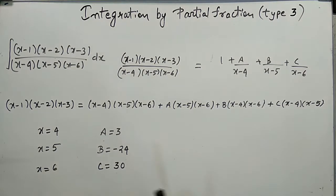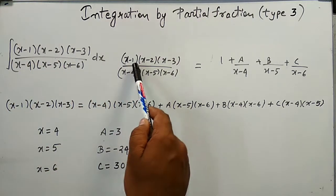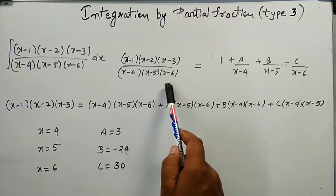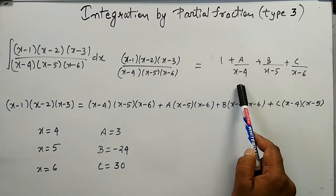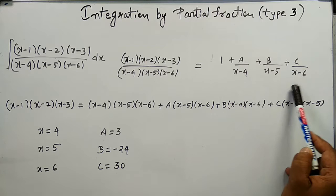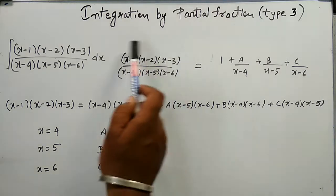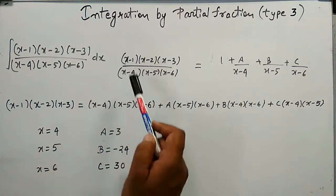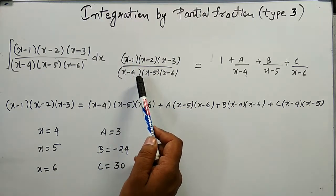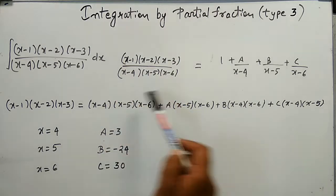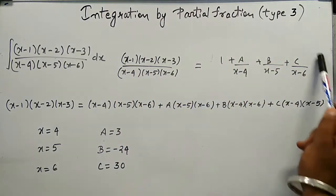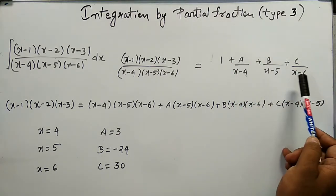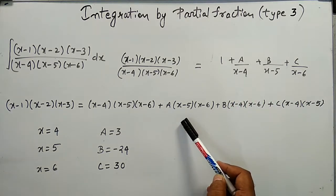In the third example, since the degree of numerator and denominator are equal, we rewrite the rational expression as 1 plus A/(x−4) plus B/(x−5) plus C/(x−6). For such expressions where degree of numerator equals degree of denominator, the partial fraction form must include a constant term of 1. Taking the LCM of the terms gives us the working equation.